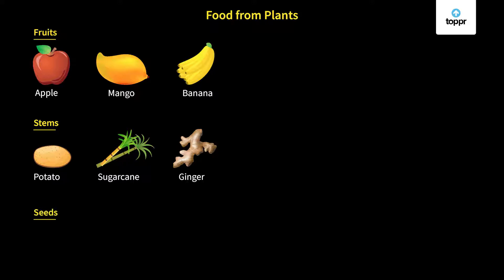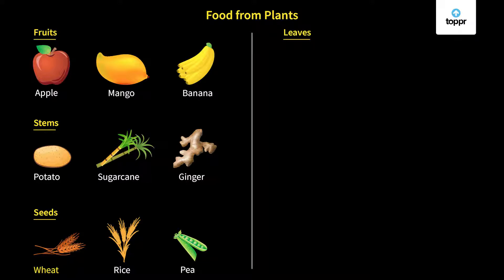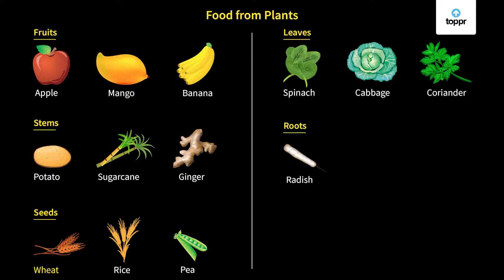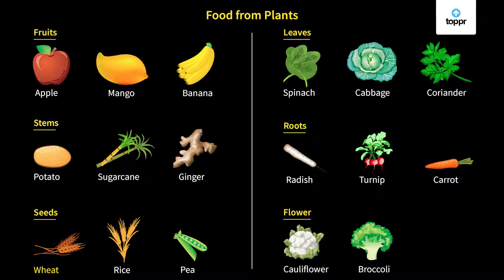Next, when we talk about seeds — seeds are very commonly eaten in the form of wheat, rice, peas, and many others. The leafy part of the plant is considered highly nutritious, for example spinach, cabbage, and coriander. Coming to the roots — we also eat roots of plants, such as radish, turnip, and carrot. Finally, we also eat the flowers of plants, for example cauliflower and broccoli.